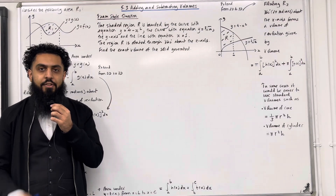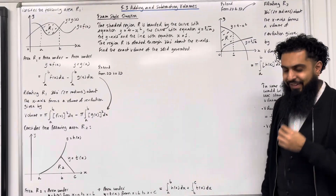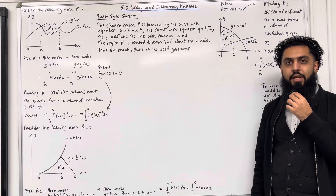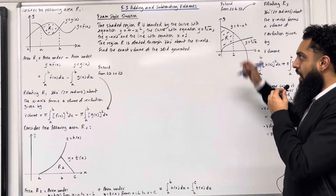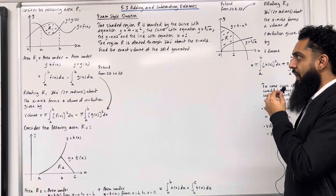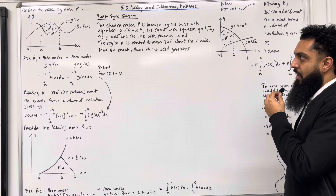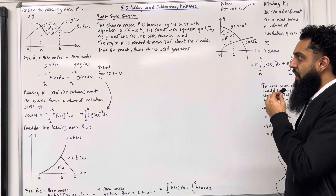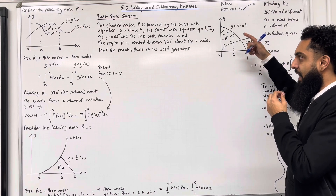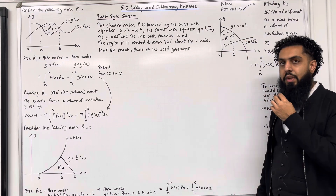I'll be implementing these key facts within two exam style questions. Here is the first exam style question. The shaded region R is bounded by the curve y = 4 − x², the curve y = ∛x, the y-axis and the line x = 1. The region R is rotated through 360 degrees about the x-axis. Find the exact volume of the solid generated.